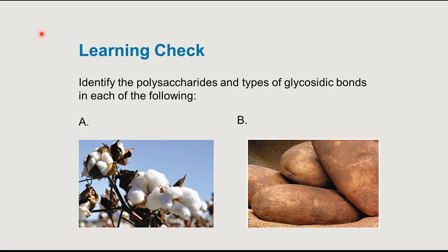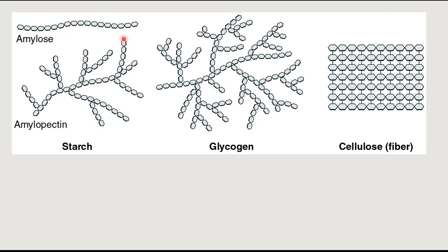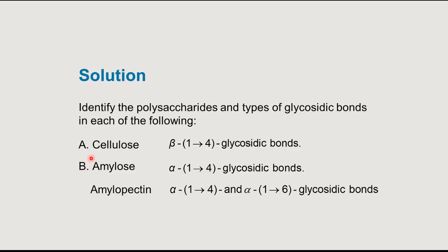To summarize: fibrous plants contain cellulose with beta-1,4 glycosidic bonds. Starches in potatoes are made of amylose and amylopectin — both have alpha-1,4 bonds, and amylopectin also has alpha-1,6 branches.